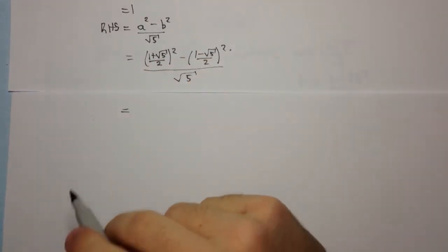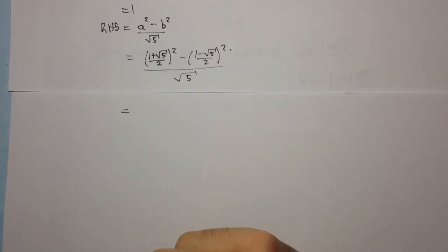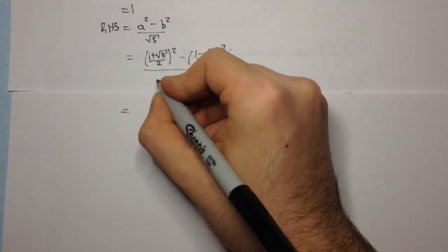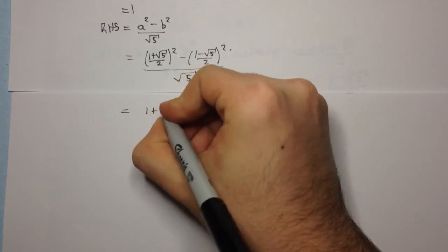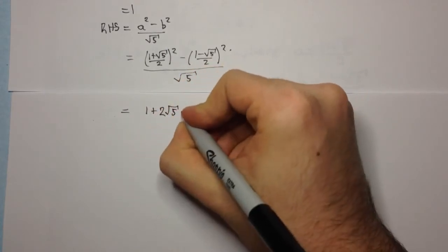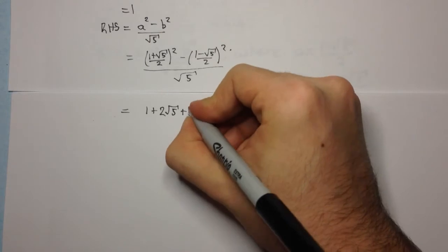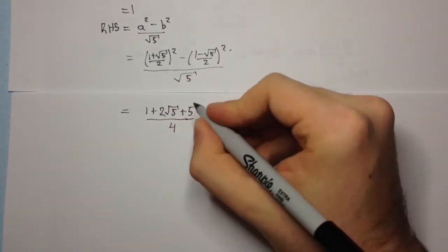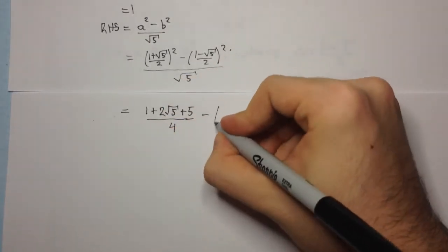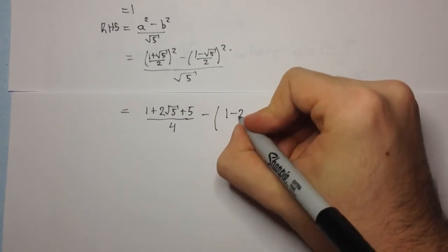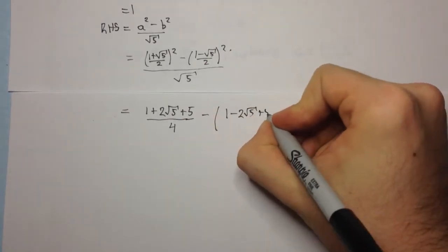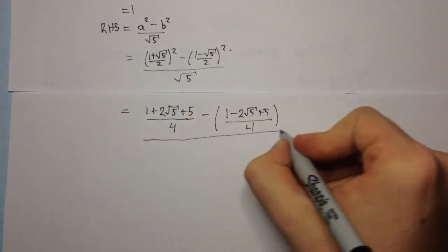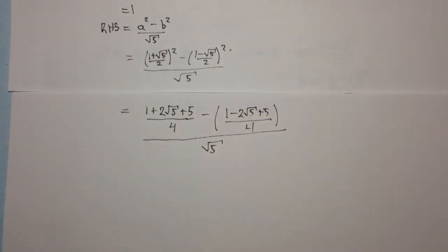Now we can expand this. So (1 plus root 5) over 2, all squared, is going to be 1 squared which is 1, plus 2 root 5, plus root 5 squared which is 5, over 2 squared which is 4, minus 1 minus 2 root 5 plus 5 over 4, all over root 5.